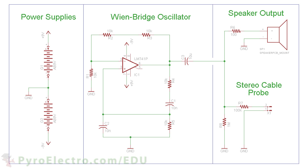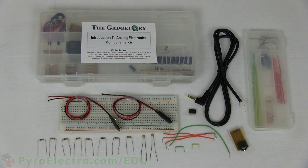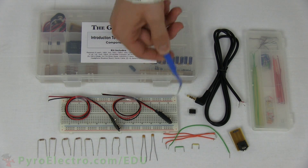For our first analog experiment, we're going to build a small circuit that generates an AC signal at about 1,500 hertz or 1.5 kilohertz. We will measure the AC signal in two ways. First, we'll use a speaker to hear the tone and verify it is working. And second, we'll use a PC oscilloscope tool to visually see the tone on a computer screen. To build this experiment, we'll need the analog electronics parts kit, the jumper wire kit, and a breadboard.